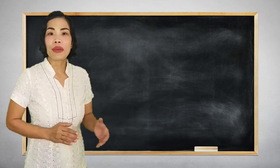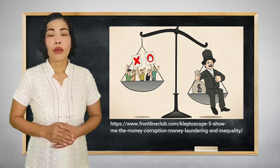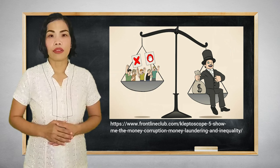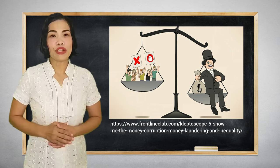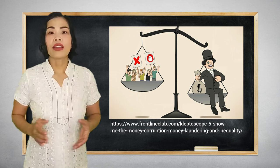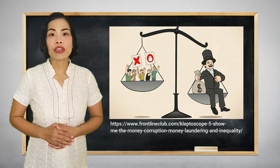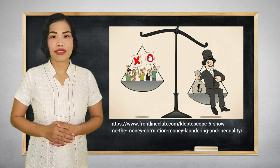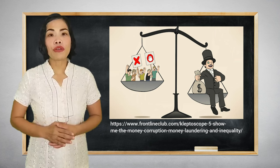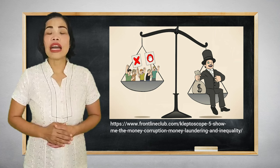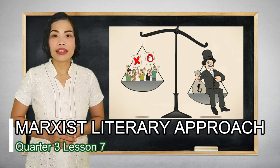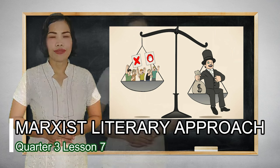Let's examine the picture on the board. What is the picture all about? What kind of discrimination is shown in the picture? How does discrimination affect a person's life? Let's answer all those questions as we go along with our discussion about Marxist literary approach.